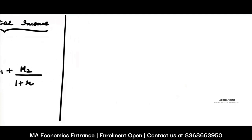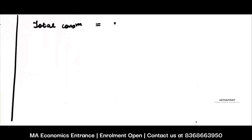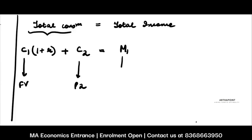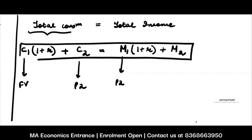What if I write the same equation in terms of future value? Total consumption has to equal total income. C1 is in Period 1, C2 is in Period 2. To write everything in future value terms, C2 is already in Period 2. To bring C1 to Period 2, I multiply it by (1 + R). So I get C1 × (1 + R) + C2. This equals income in Period 1 brought to Period 2 — M1 × (1 + R) — plus income in Period 2, M2. So: C1(1 + R) + C2 = M1(1 + R) + M2. This is the budget equation in future value terms.